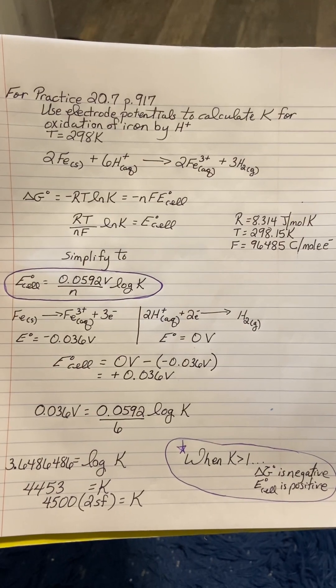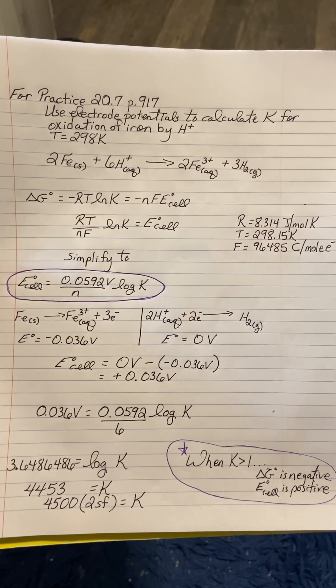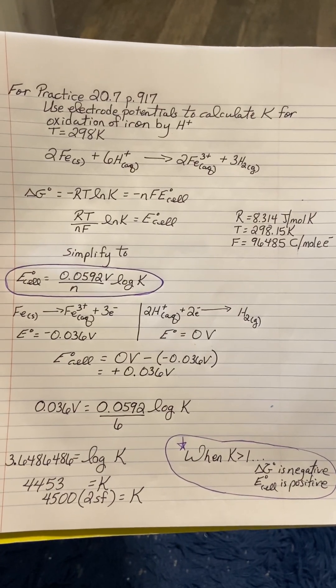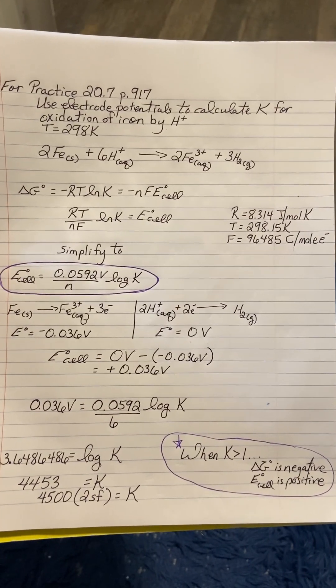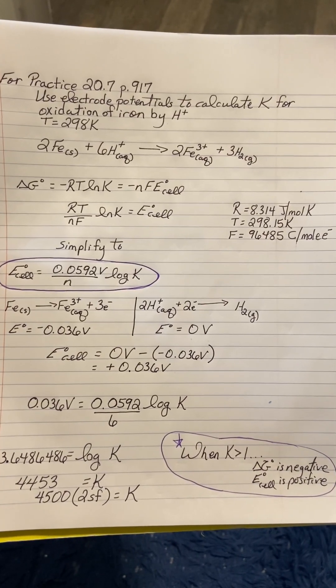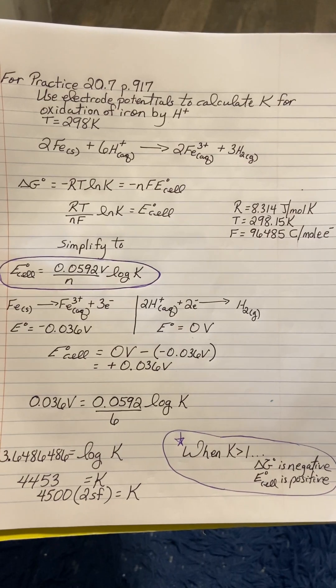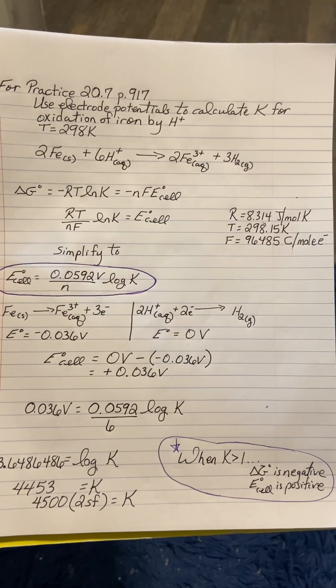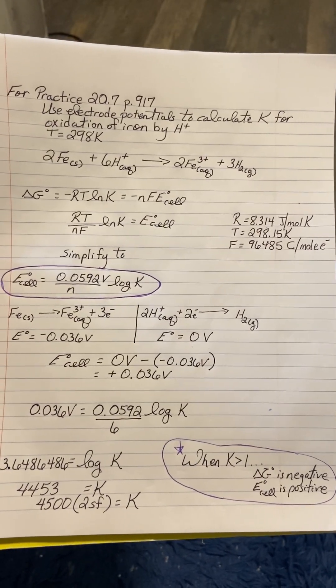Let's simplify. We have R, T, and F are standard constant values, so we substitute those in and reduce down. Simplify it to E_cell equals 0.0592 volts divided by n times log of K. Remember that n is the moles of electrons involved in this redox process.